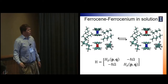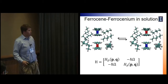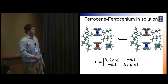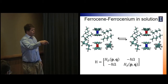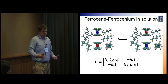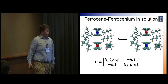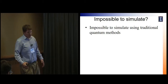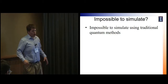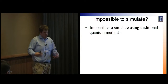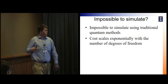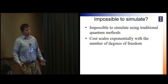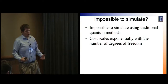When we put the system in solution, it has a completely different interaction with the solvent in the donor configuration compared to the acceptor configuration, and this really changes how the time evolution behaves. A straightforward simulation where you plug this into the Schrödinger equation and solve it is impossible because the cost of quantum simulation scales exponentially with the number of degrees of freedom, and there are a lot of them.